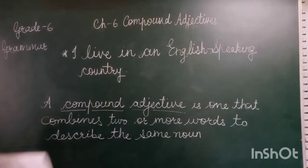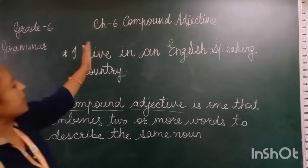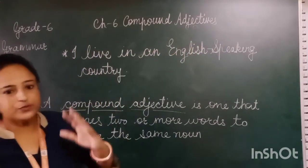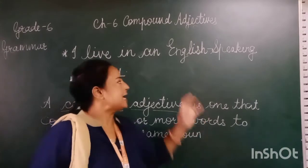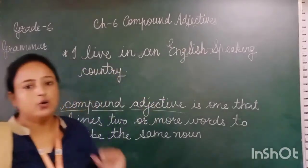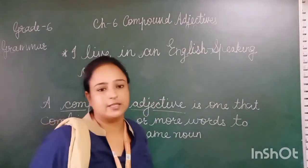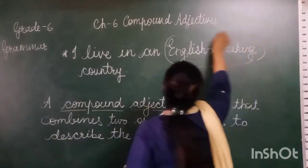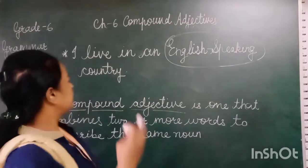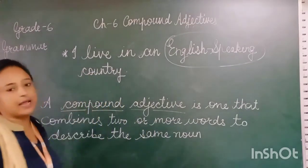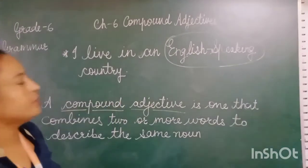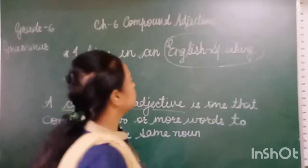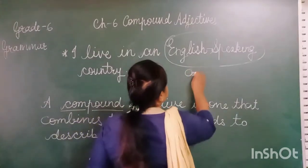Here is another example: 'I live in an English-speaking country.' Which type of country is it? It is an English-speaking country — a country where English is spoken. Here, 'English-speaking' is a compound adjective. It is describing the noun 'country,' telling us what type of country it is: an English-speaking country.